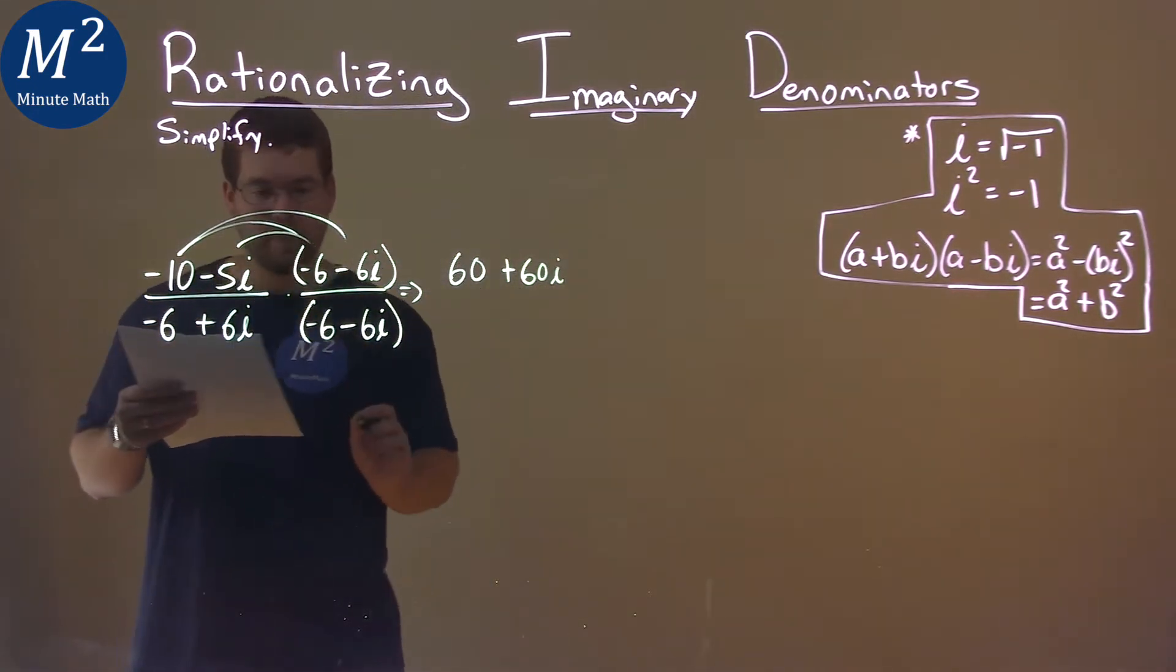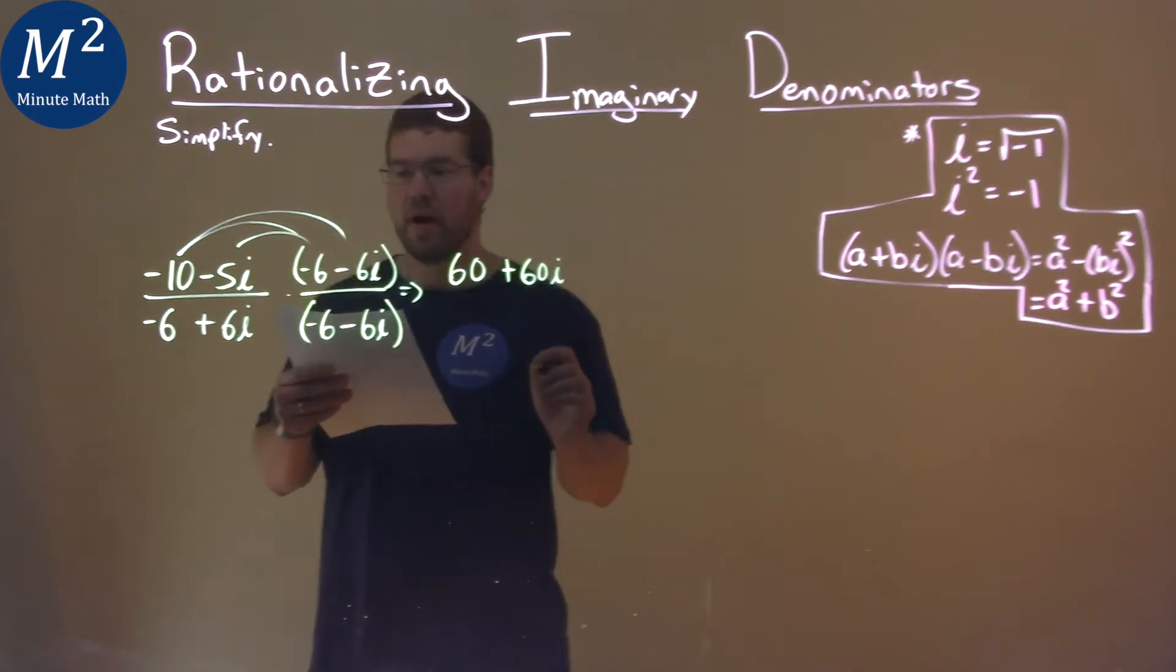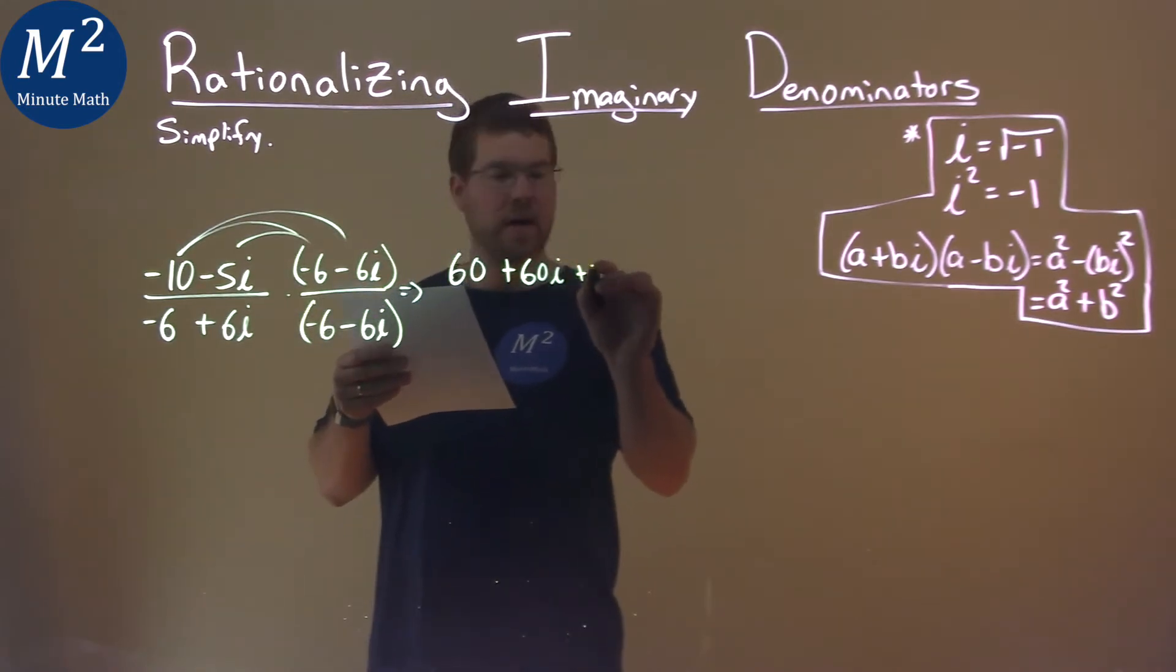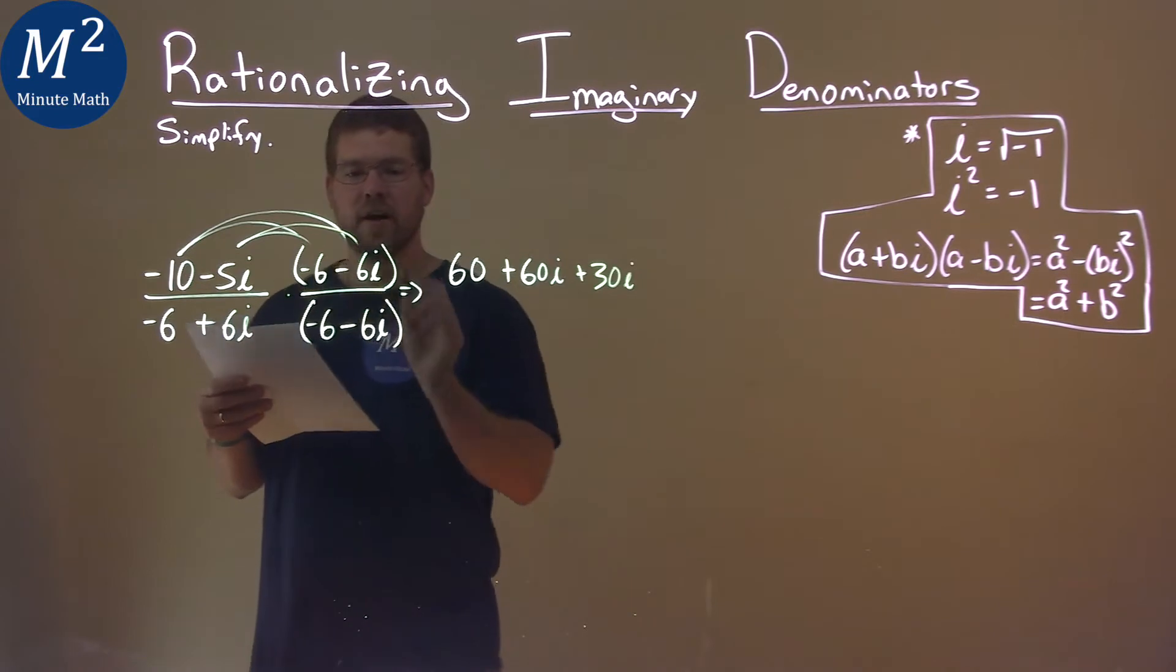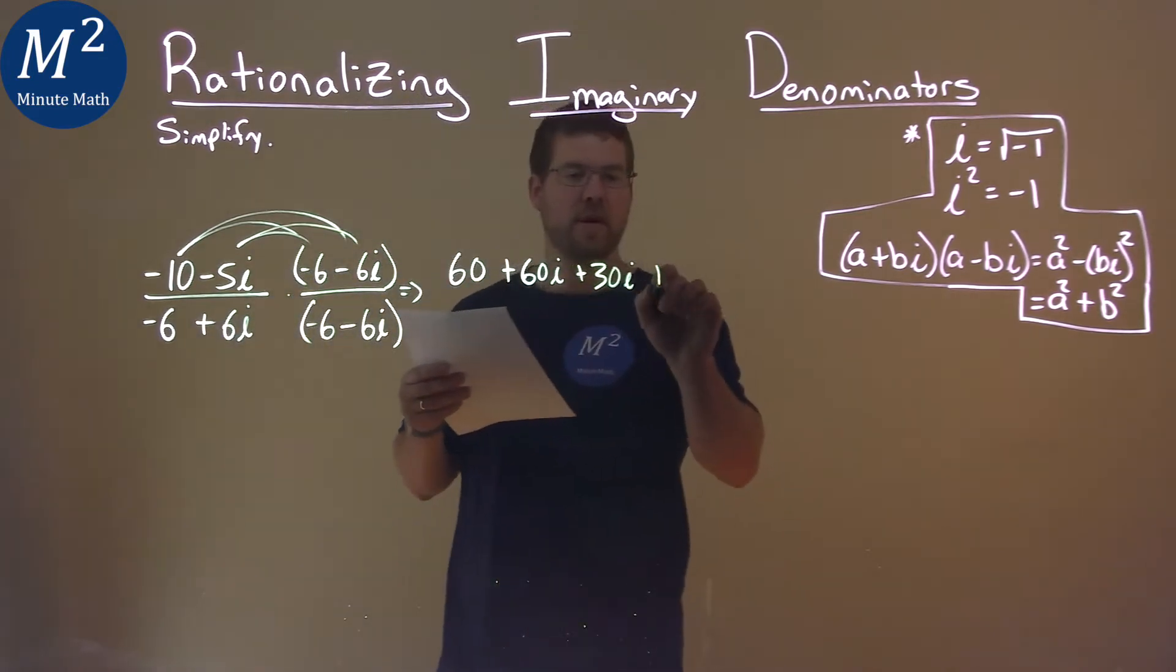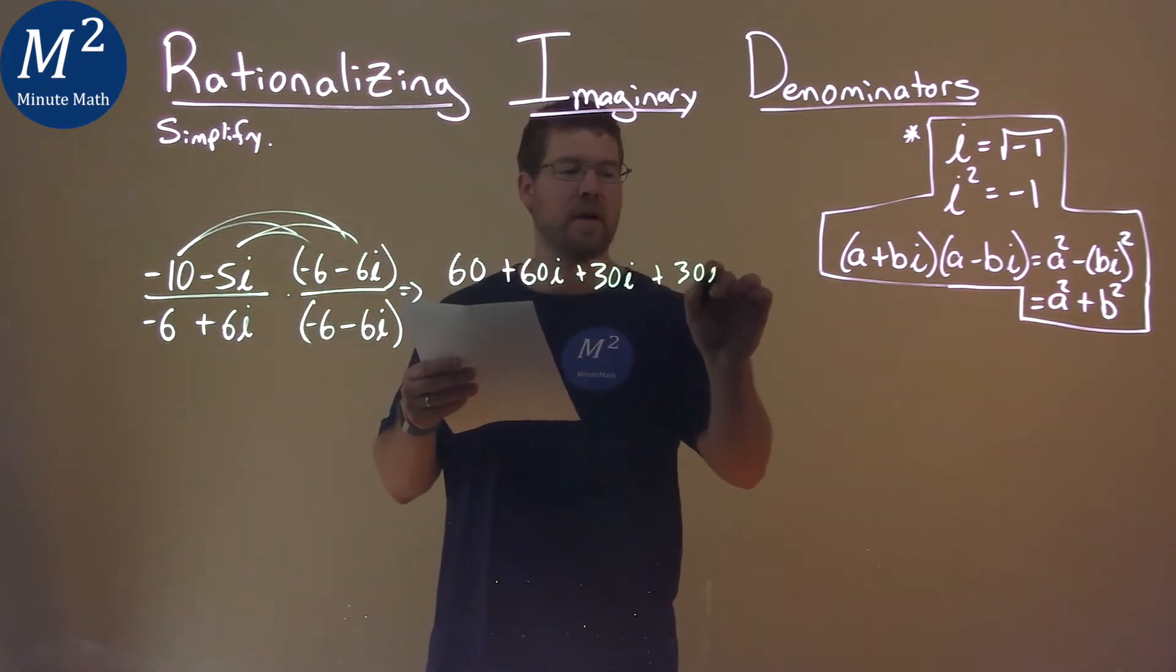Negative 5i times minus 6 is positive 30i. And negative 5i times negative 6i is positive 30i squared.